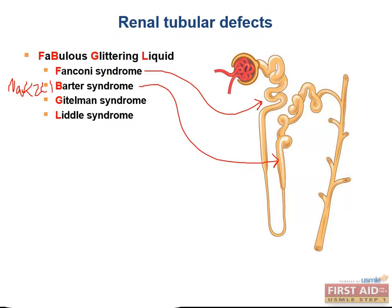Gitelman syndrome is a reabsorption defect in the distal tubule due to an autosomal recessive mutation in the sodium chloride cotransporter, and it's less severe than Bartter syndrome because the majority of reabsorption occurs in the earlier parts of the nephron.